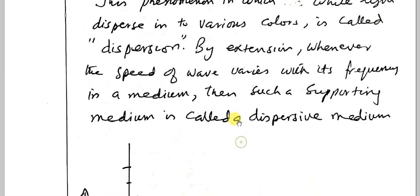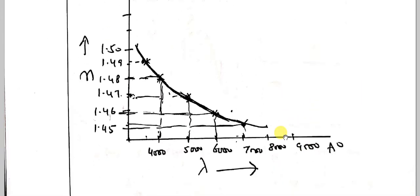Here you can see the graph in which lambda is plotted along the x-axis in angstrom, ranging from 4000 to 9000, and n is from 1.45 to 1.5. One can see the relationship between n and lambda.